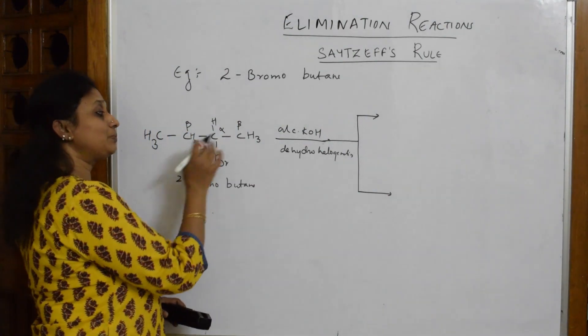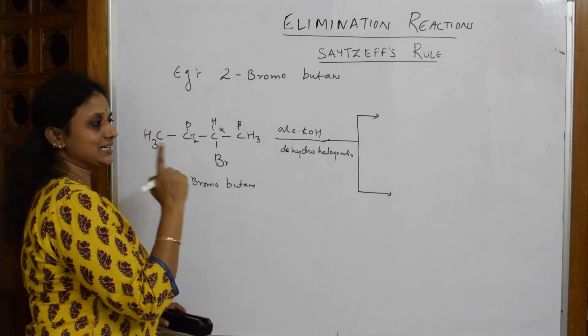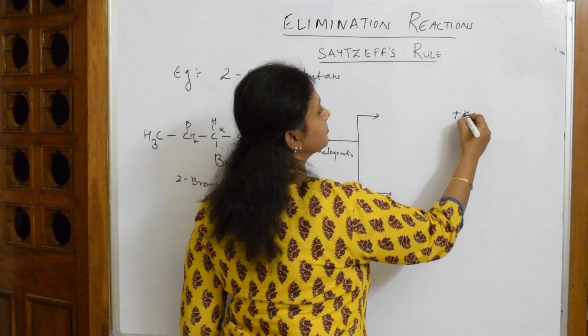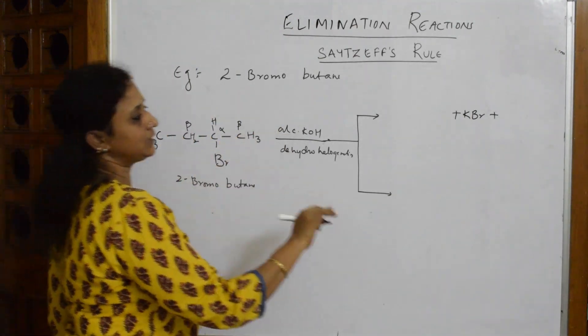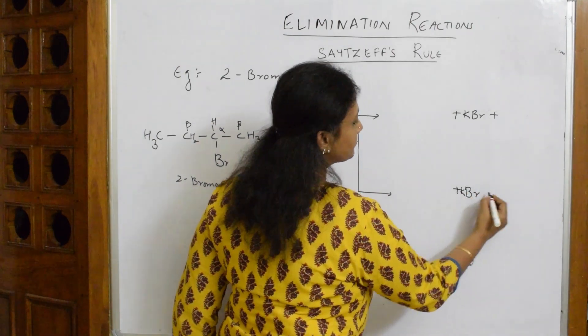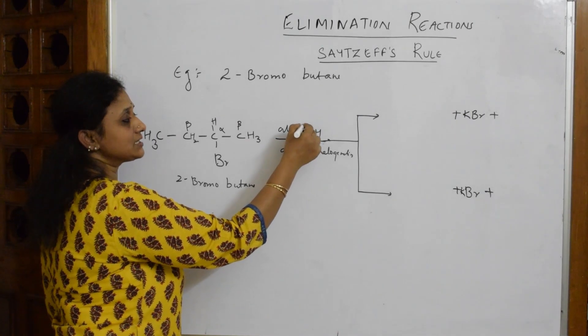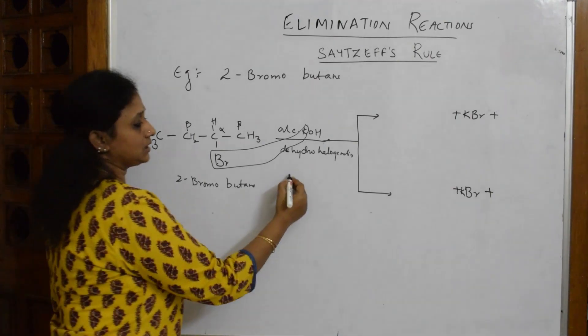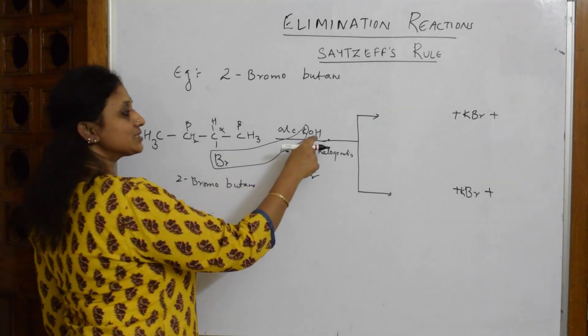Let us start. K and Br comes out as KBr, done. Here also KBr, because dehalogenation should be done. Now your water molecule - this part is done - KBr. Now there is OH⁻. Now the question is, this OH⁻...